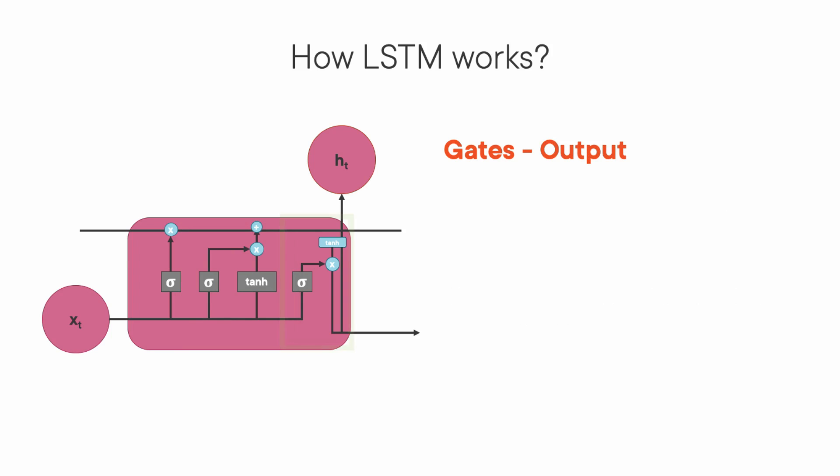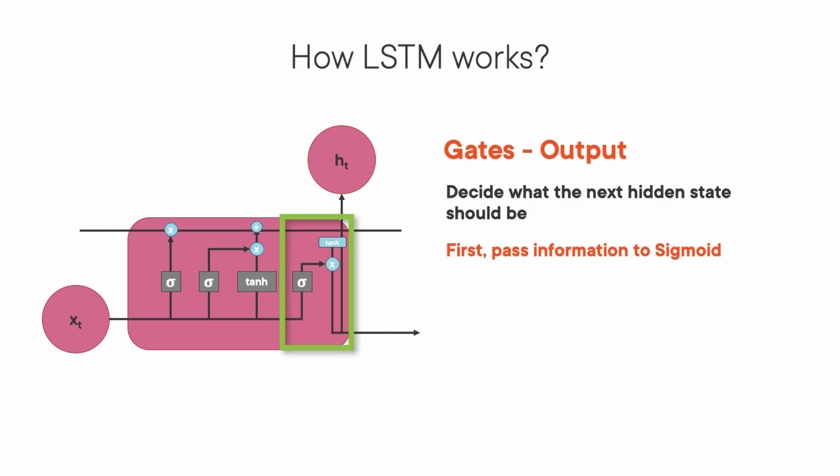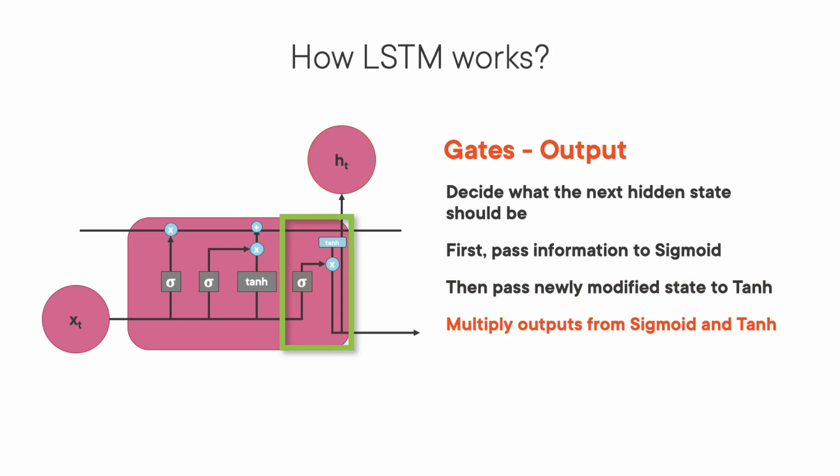Next, we have the output gate. The output gate decides what the next hidden state should be. Remember that the hidden state contains information on previous inputs and is also used for predictions. First, we pass the previous hidden state h and the current input xt into a sigmoid function. Then we pass the newly modified cell state to the tanh function. We multiply the tanh output with the sigmoid output to decide what information the hidden state should carry — the output is the hidden state. The new cell state and new hidden state are then carried over to the next time step. Here, the sigmoid layer decides which part of the cell state will be present in the output, whereas the tanh layer shifts the output in the range of minus one to one. That's how an LSTM recurrent neural network performs learning while taking long context into account.